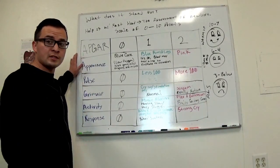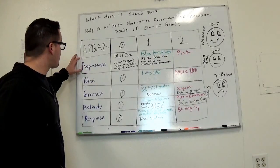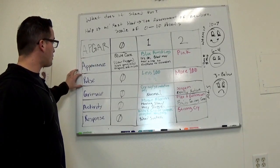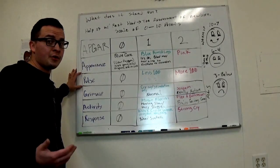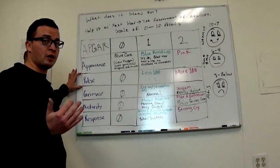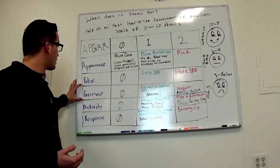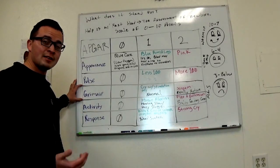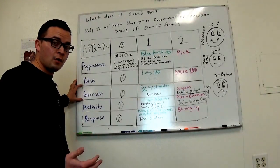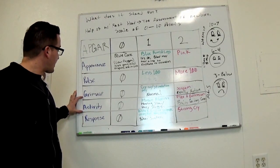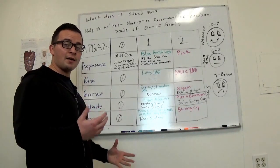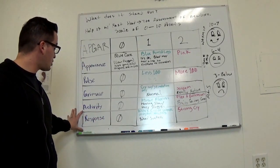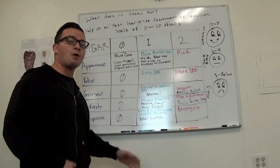As far as what it stands for, it stands for Appearance, so the color of the baby in particular. Pulse: is there a pulse present and if there is, is it below 100 or above 100? That matters for our baby. Grimace: the stimulation, do we have to stimulate them to cry or do they cry on their own? Activity: are they moving around fine, are they kind of sluggish, stuff like that? Respiration: we're talking about the airway. How is the airway looking?